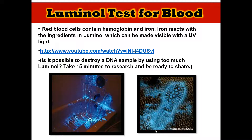This is an example of the luminol test, which is a presumptive blood test that can be done on the scene — you don't have to wait days or weeks for results to come back. Blood, specifically red blood cells, contain hemoglobin and iron. The iron is actually what reacts with the luminol, and with a UV light it can be made to glow. You can see that in the picture here.